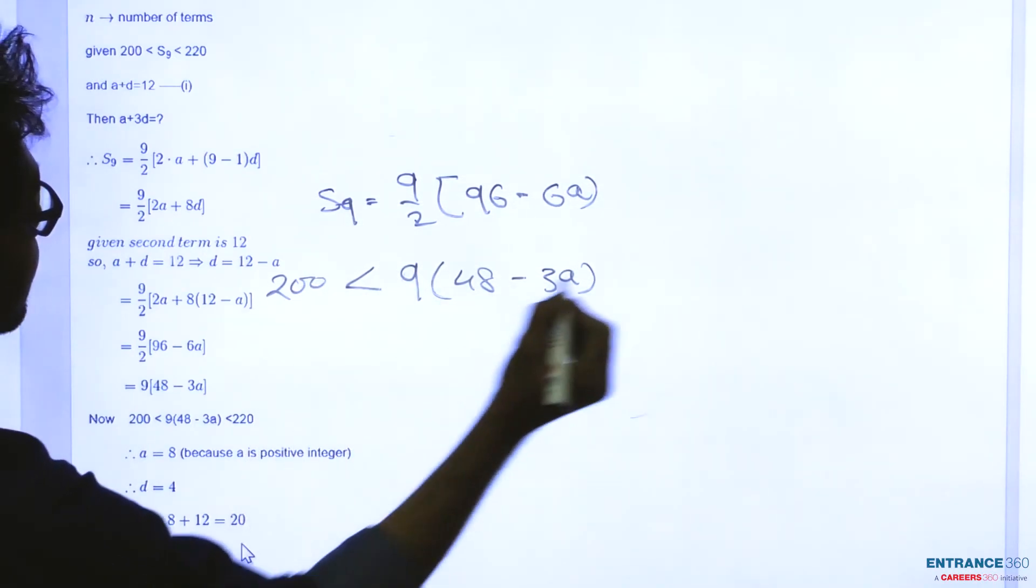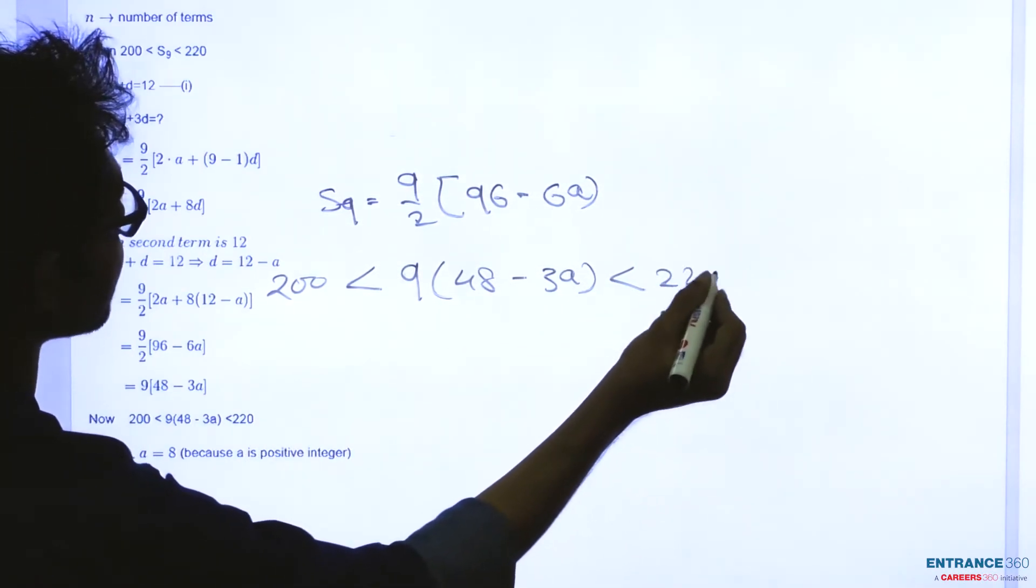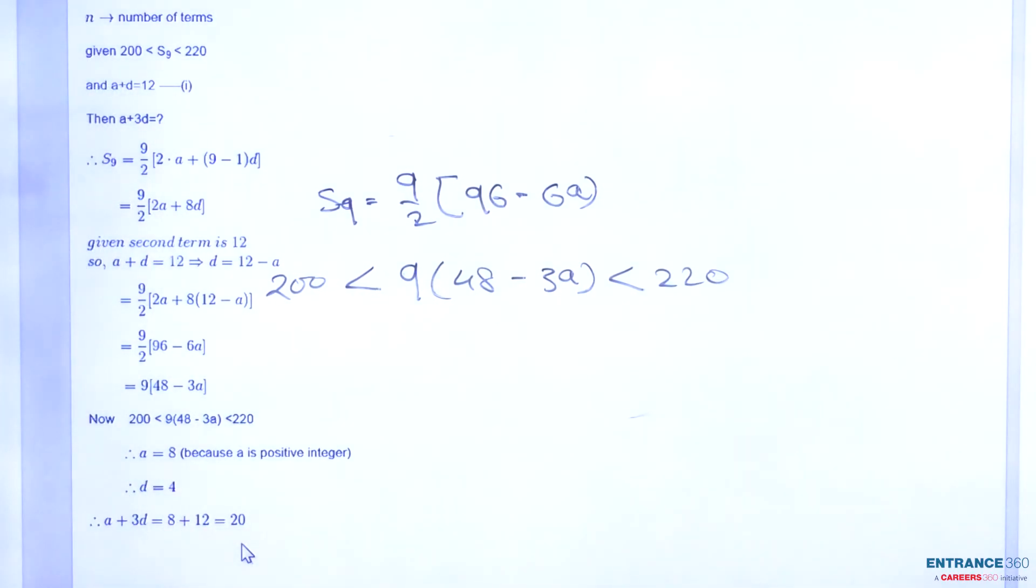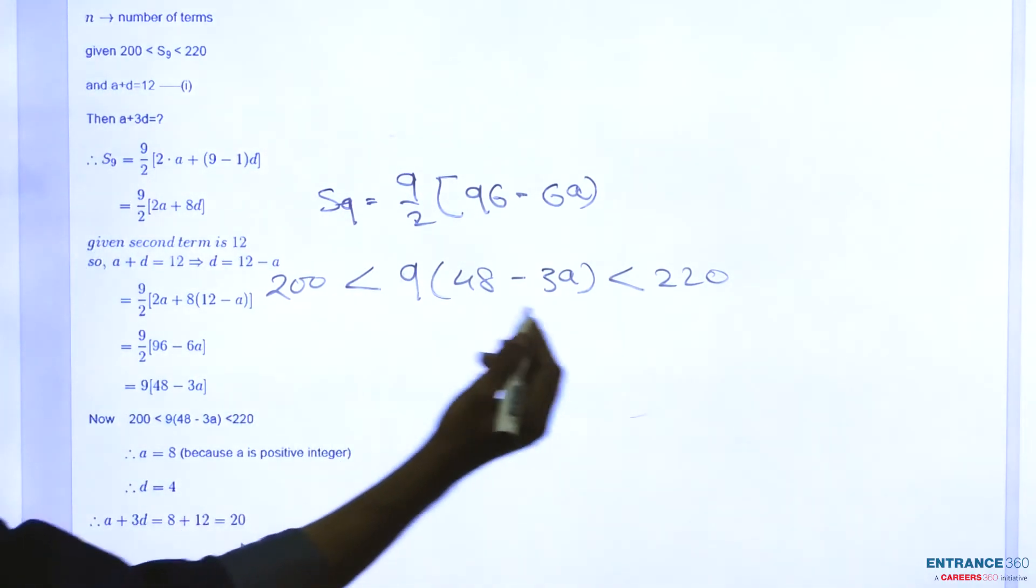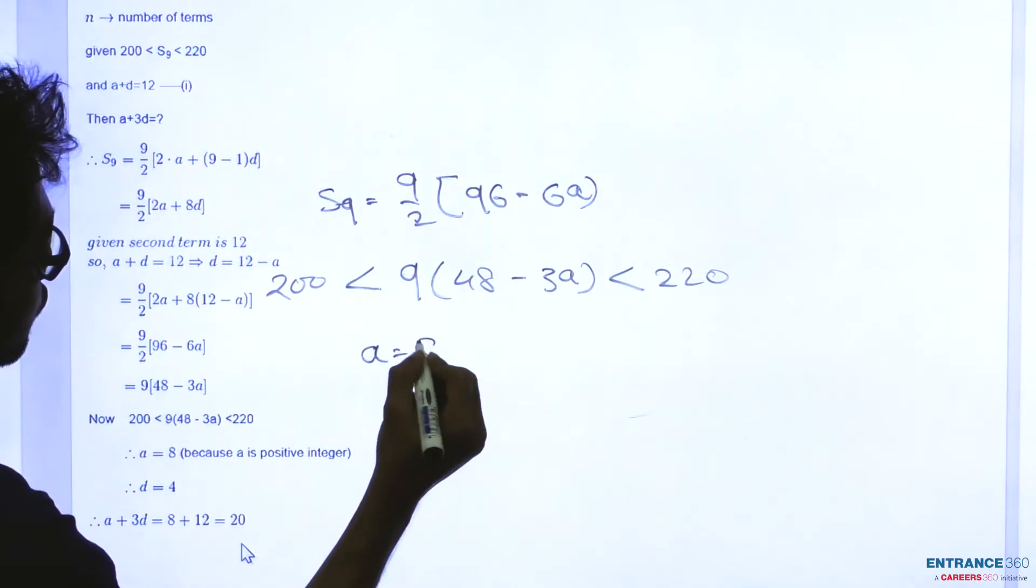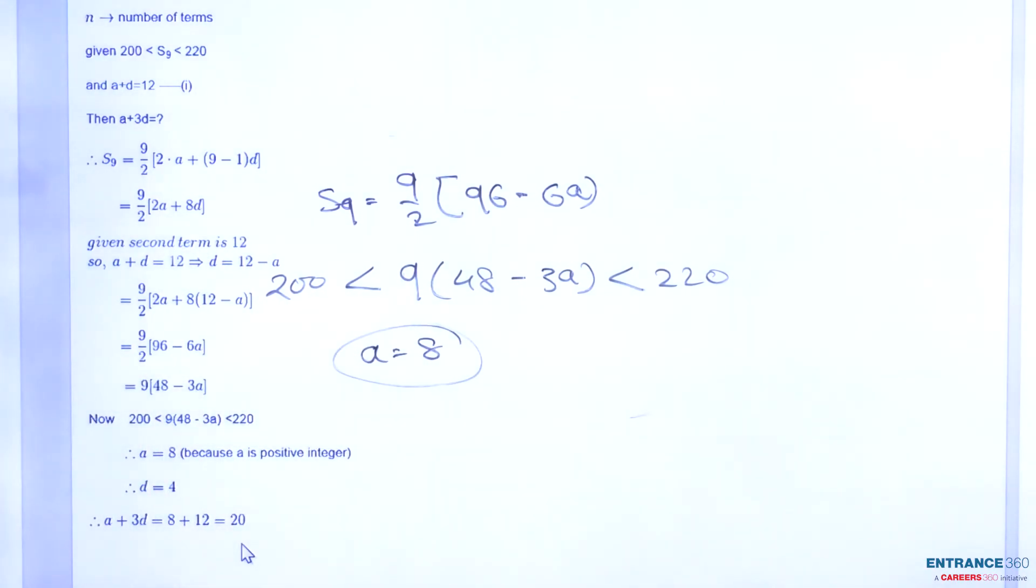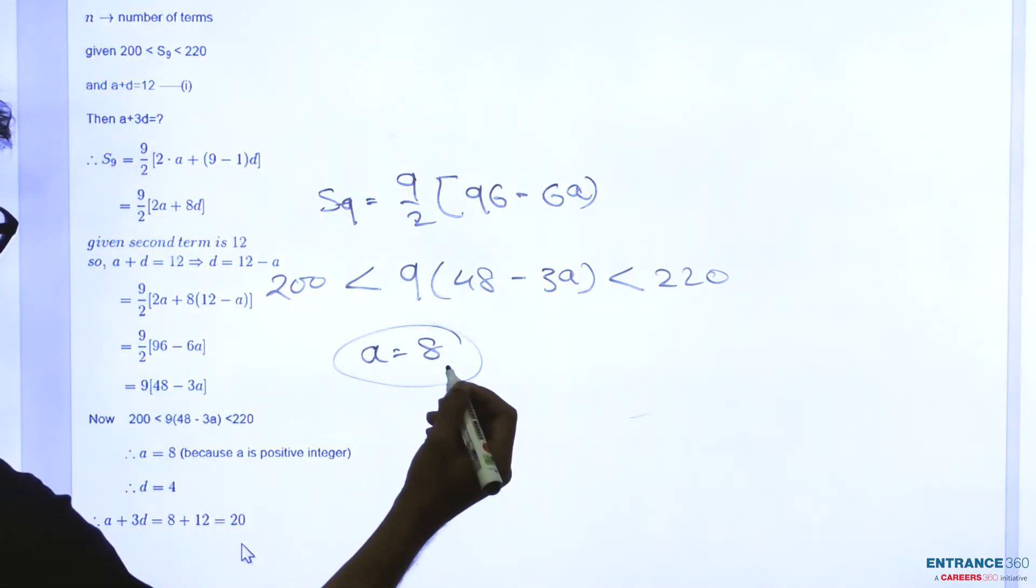This is given as 200 < S₉ < 220. Since a is positive and all terms of the AP are positive integers, after simplifying we get a = 8.